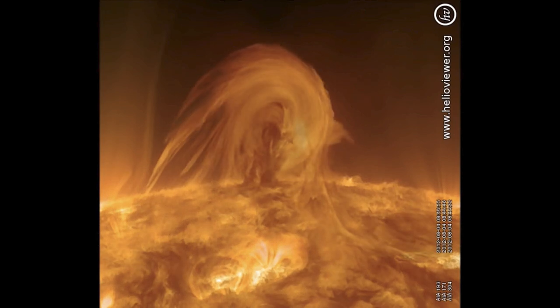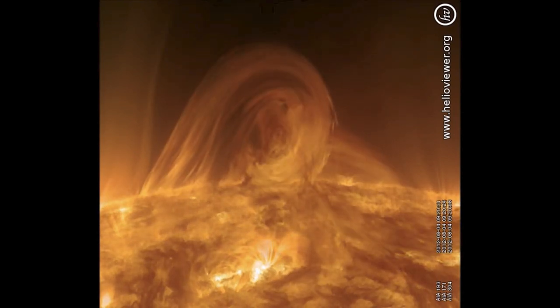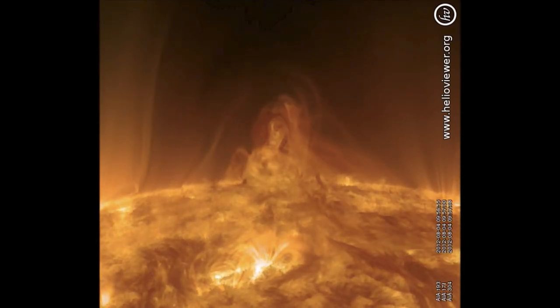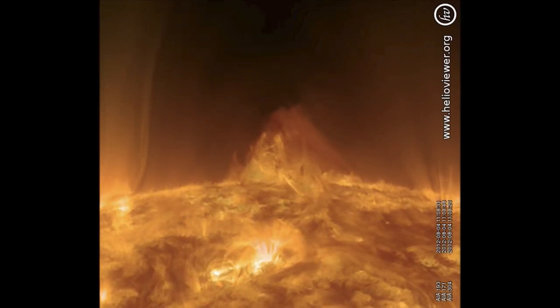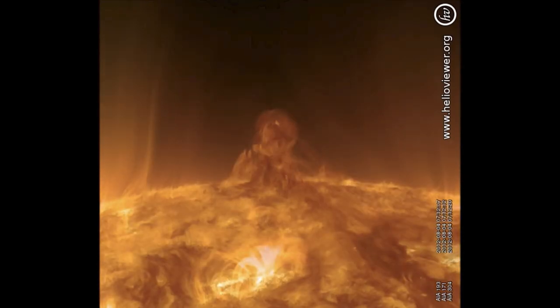The loop is caused by magnetic fields on the sun. The sun has a very strong magnetic field and it gets all twisted and tangled up because of the way the sun rotates.